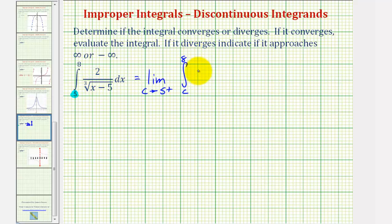Let's rewrite the integrand as two times the quantity x minus five to the negative one-third. Remember, if we have a cube root, that's equivalent to a to the one-third power. And if we have one divided by a to the positive one-third power, that's equivalent to a to the negative one-third power. So we applied both of these properties here to rewrite the integral.